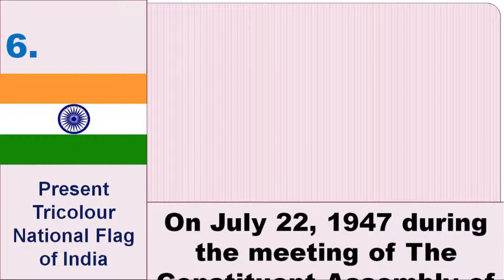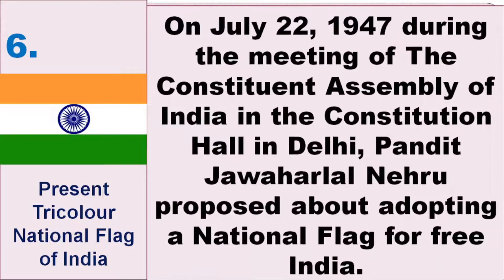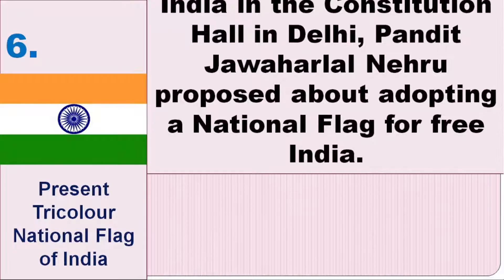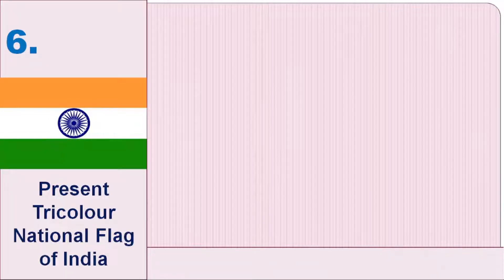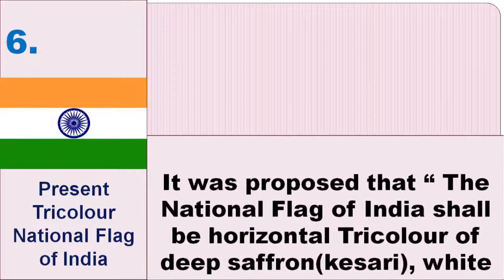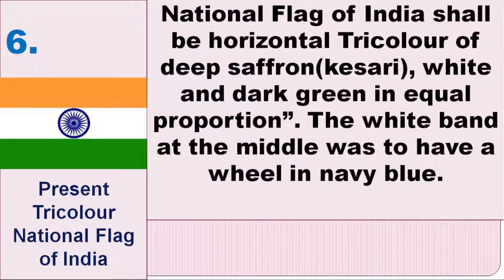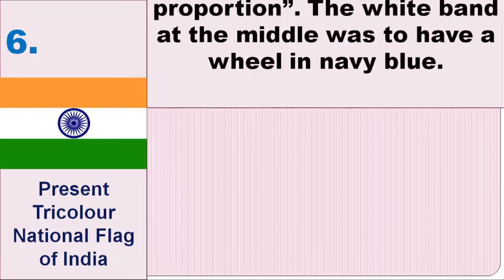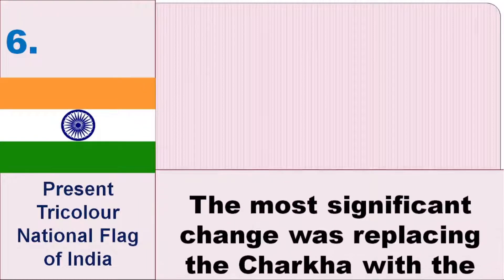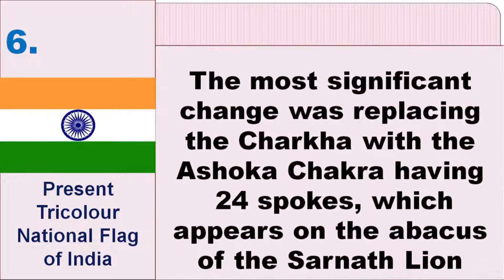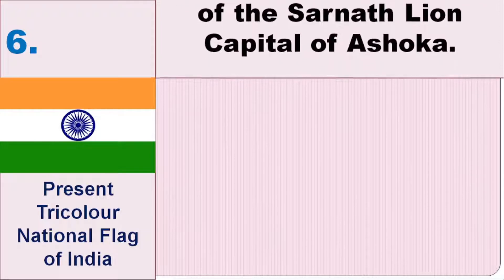In the sixth and final phase, on July 22, 1947, during the meeting of the Constituent Assembly of India in the Constitution Hall in Delhi, Jawaharlal Nehru proposed adopting a national flag for free India. It was proposed that the national flag of India shall be a horizontal tricolor of deep saffron (kesari), white, and dark green in equal proportion. The white band in the middle was to have a wheel in navy blue. The most significant change was replacing the Charkha with the Ashoka Chakra having 24 spokes, which appears on the abacus of the Sarnath lion capital of Ashoka.